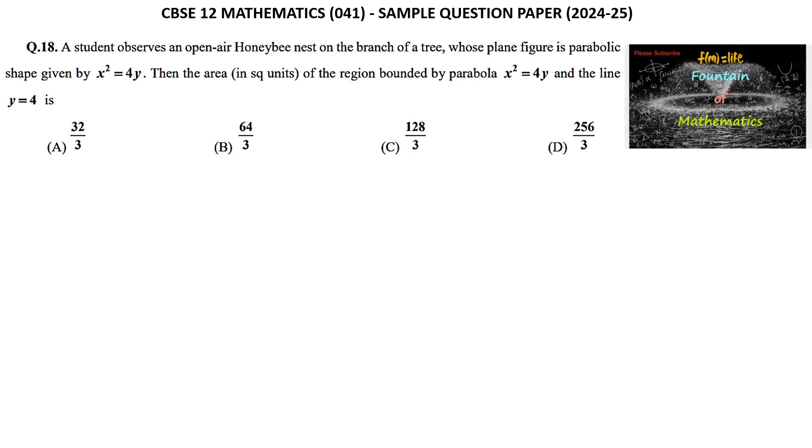A student observes an open-air honeybee nest on the branch of a tree whose plane figure is a parabolic shape given by x² = 4y. So let us see the graph. x² = 4y is a parabolic curve opening upwards direction with vertex at the origin.